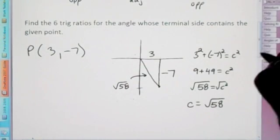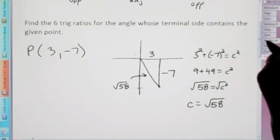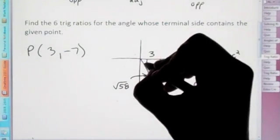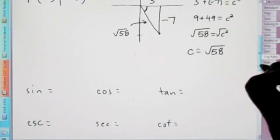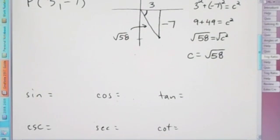Now that we have all three sides, we can find the six trig ratios. Remember, we go from our terminal angle here. So from that angle, we're going to write down all the six trig ratios.